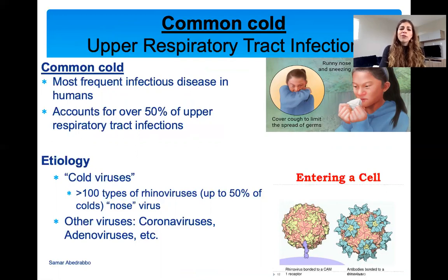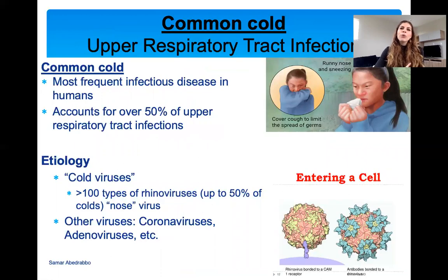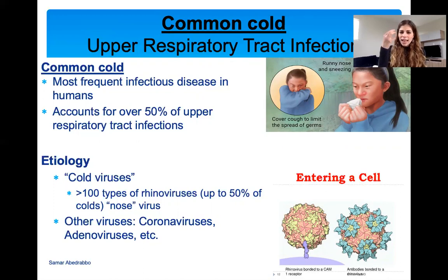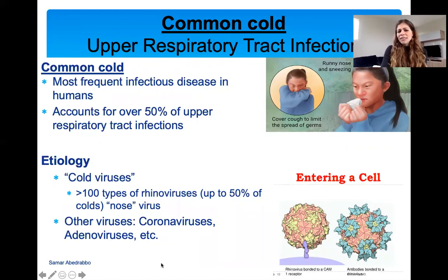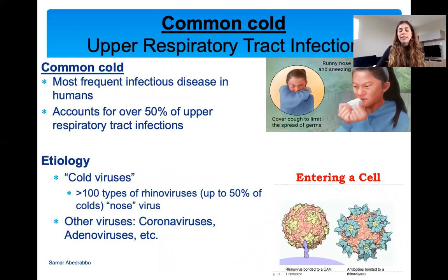The etiology — the cause — of common colds are viruses. There are many different viruses. The most common types are rhinoviruses. When you think 'rhino' or 'rhinitis,' think rhinoceros — they have big noses. That's why these are called rhinoviruses because they affect the nasal area. There are over a hundred types of rhinoviruses. Other viruses can also cause common colds: many coronaviruses, adenoviruses, and many other viruses, but mainly rhinoviruses.